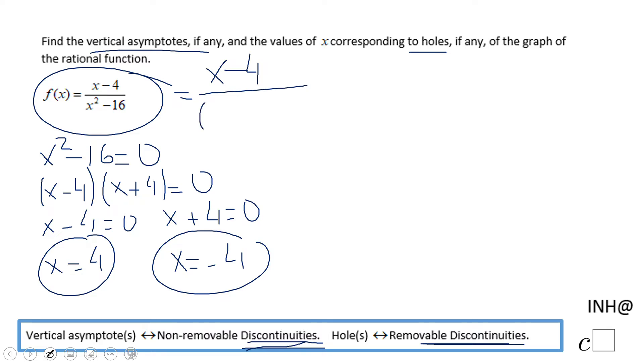Writing in factored form, x squared minus 16 is x minus 4, x plus 4. So if you notice now, we can simplify this rational expression.